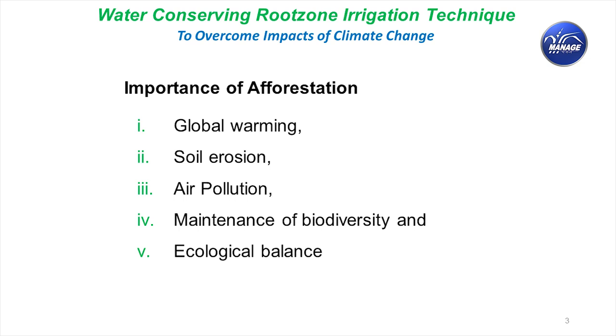Afforestation plays a very key role in the context of global warming, preventing soil erosion, air pollution, maintaining biodiversity and ecological balance. In the Kyoto Protocol, afforestation was one of the major strategies to reduce carbon because trees act as carbon sinks. In afforestation programs, forest departments, rural development agencies, and farmers follow different watering practices. Conventional surface watering is largely the practice, while pitcher and drip irrigation are confined mainly to horticulture fruit trees as they are expensive.